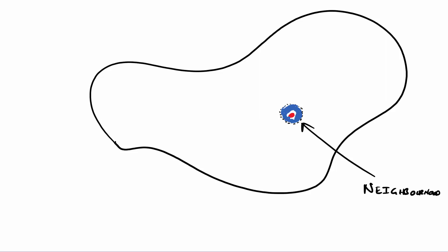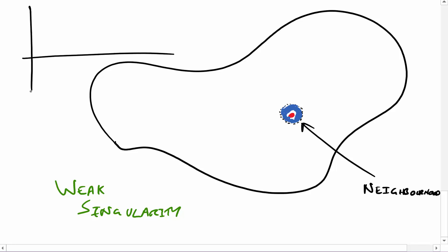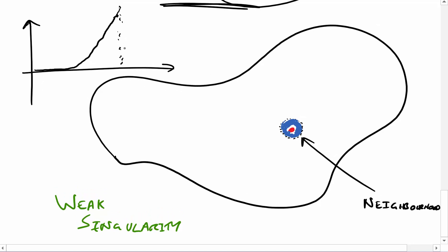In order to use this method we have to look for something called weak singularities. This is basically where the singularity isn't too severe — it doesn't shoot off to infinity immediately, but rather gently eases up to infinity. For example, you might have a function that gradually builds and then gradually eases towards infinity at that point, rather than suddenly shooting straight up.